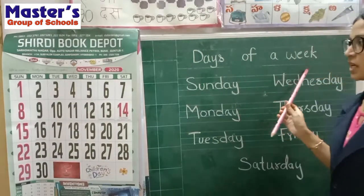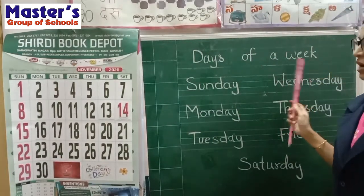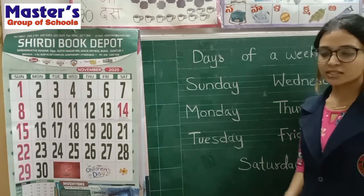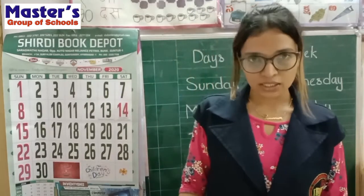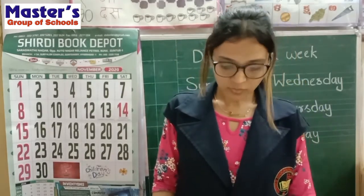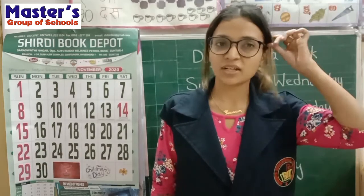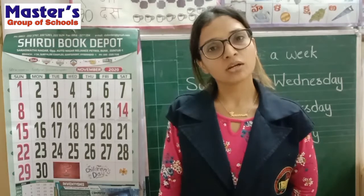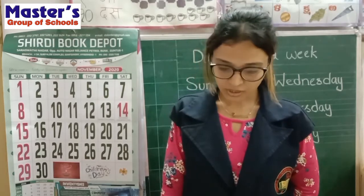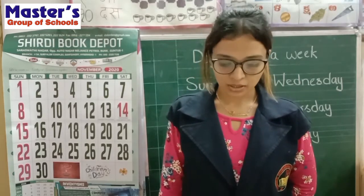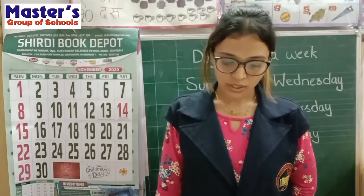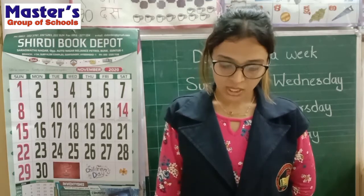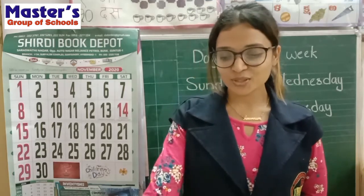Days of a week. In a week, we are having Sunday, Monday, Tuesday, Wednesday, Thursday, Friday and Saturday. There are 30 or 31 days in a month. In February month, we are having only 28 days. And 29 days in a leap year. Sunday is a holiday. Everyone knows that.